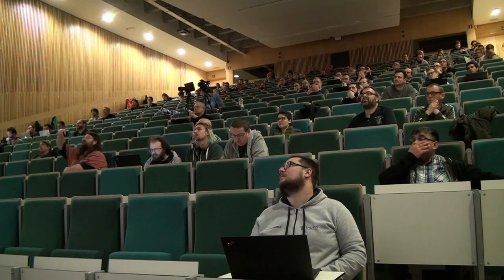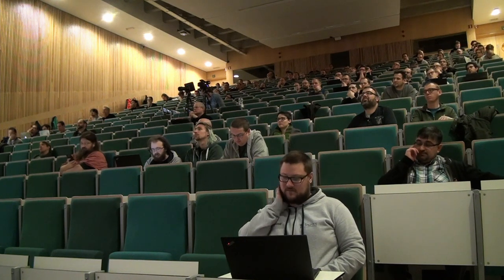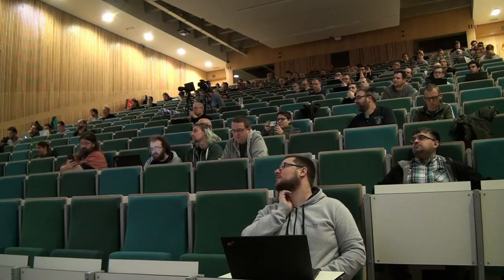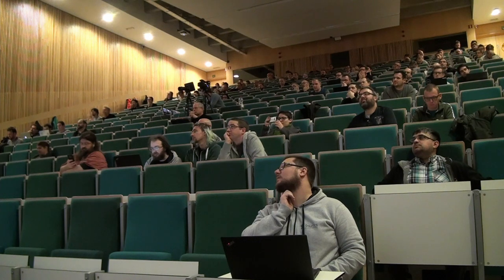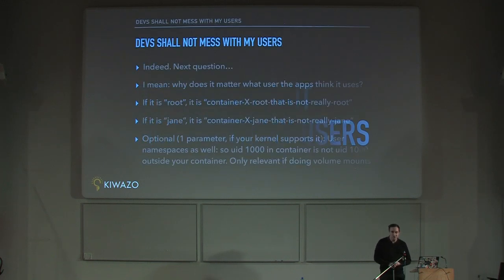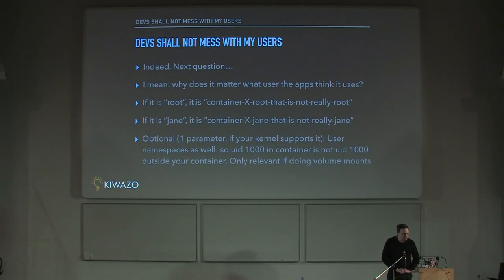By default, without configuring anything, when we pull a container from the hub, it is secure by default — it is run in a throwaway environment. There's something called kernel namespaces, which has existed for probably 15 years, which makes sure that the root user inside your container has nothing to do with the root user outside of your container. Somebody mentioned to me that devs should not mess with users — yes, indeed they should not. What does it matter what user runs inside that container? If you think it runs as root, it's not the same root you're used to. If it runs as Jane, it's not the same Jane that's on your local system.